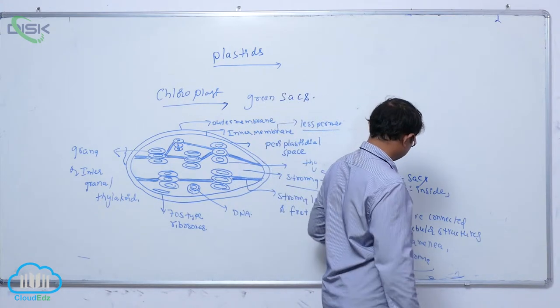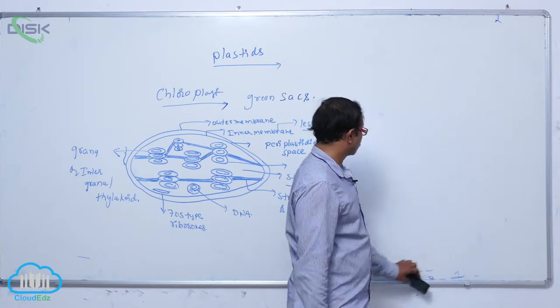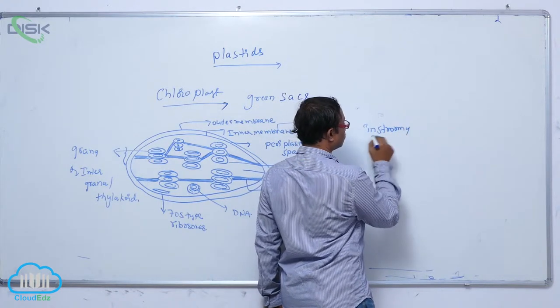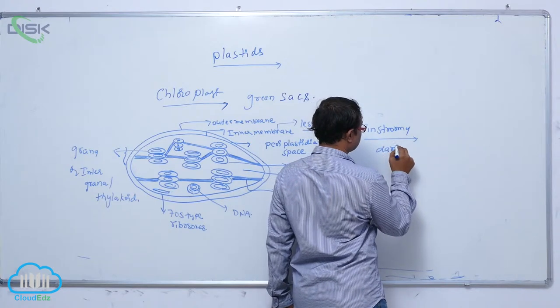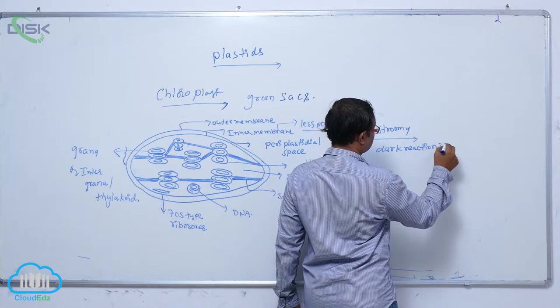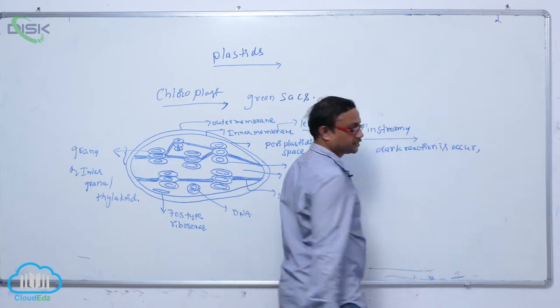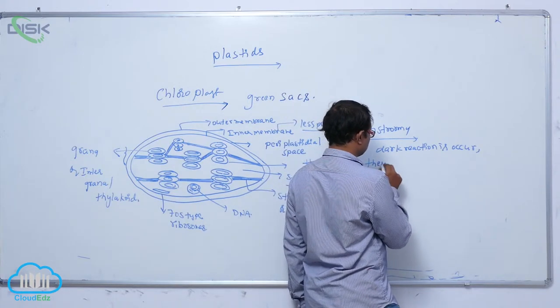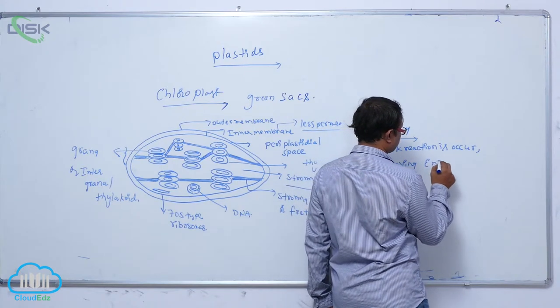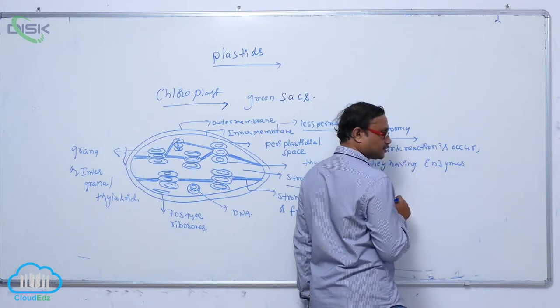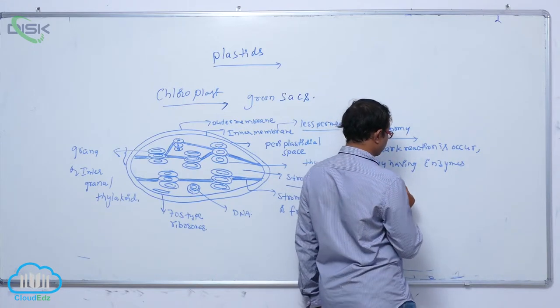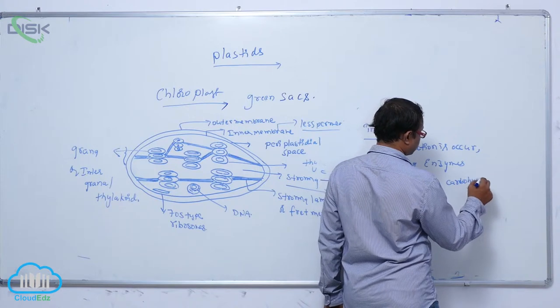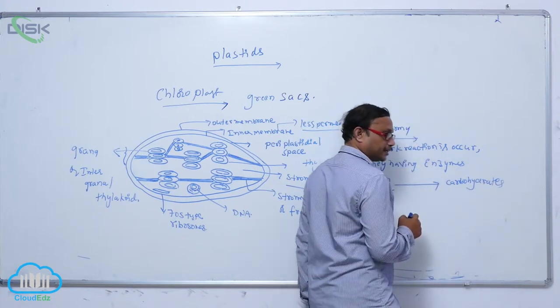In stroma, dark reaction occurs. It means, so they have that enzymes. By the presence of enzymes, carbon dioxide is reduced to carbohydrate.